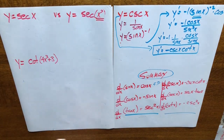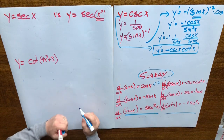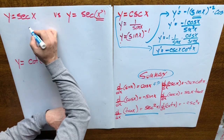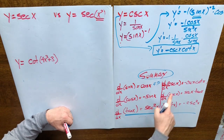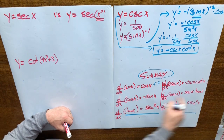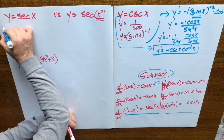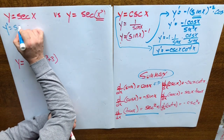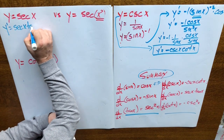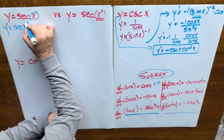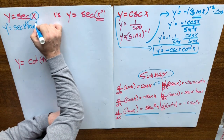Let's practice, putting these derivatives to use. So y equals secant x — the derivative of secant x is simply secant x tan x. So y prime equals secant x tan x. The argument in the question is the argument in the answer.